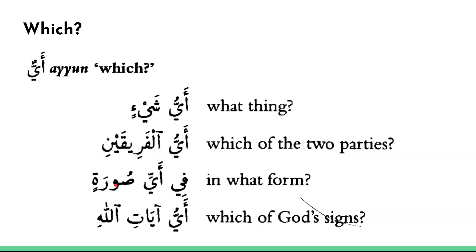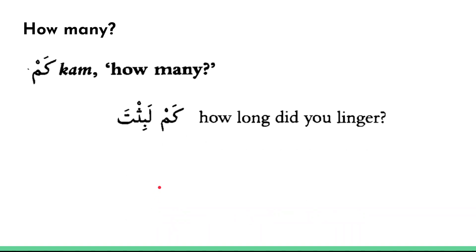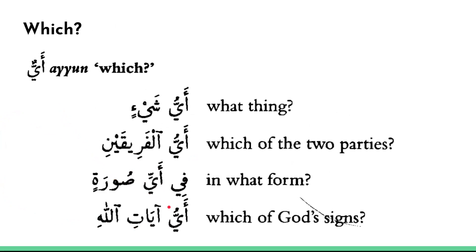Fi ayyi sooratin means 'in which form?' — soorat means form or picture, and ayyi changes its ending because it comes after fi. This makes ayyu one of the rare interrogative words that can actually change its form, unlike kam or lima which remain fixed. Ayyu ayaati-Llahi means 'which of God's signs?'